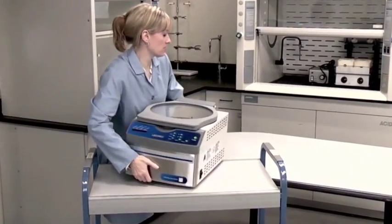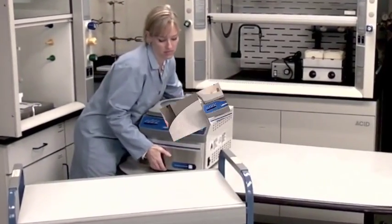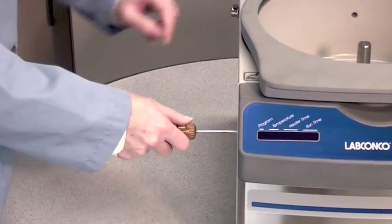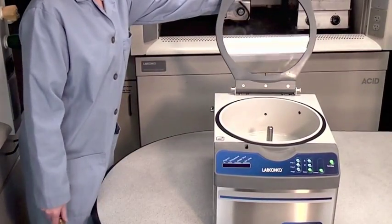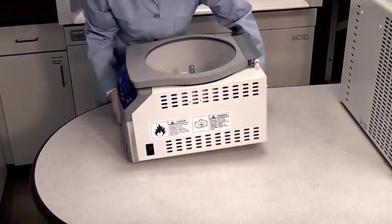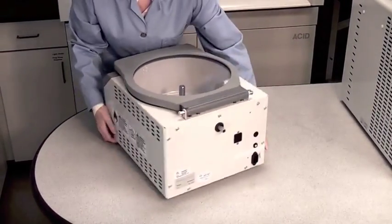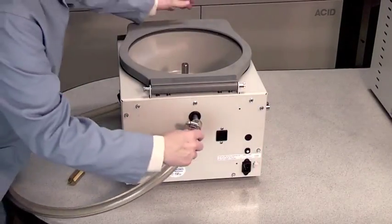Start by placing the Centravap on your lab bench or cart. To manually open the lid while the unit is not plugged in, insert a small screwdriver into the hole on the left side. Attach the vacuum hose to the back of the Centravap and clamp it tight.